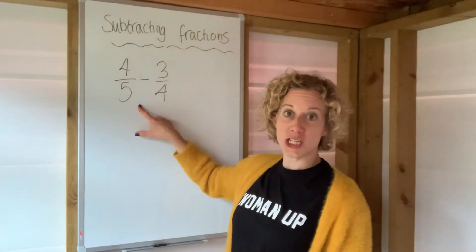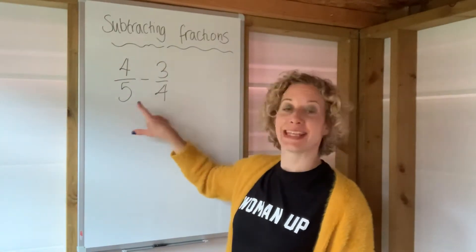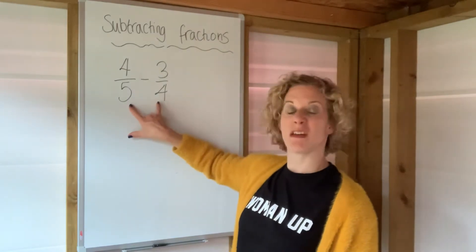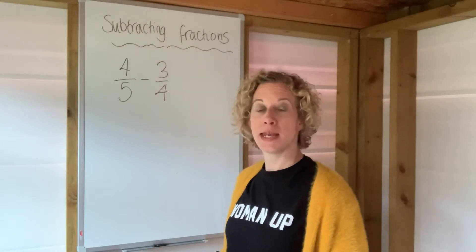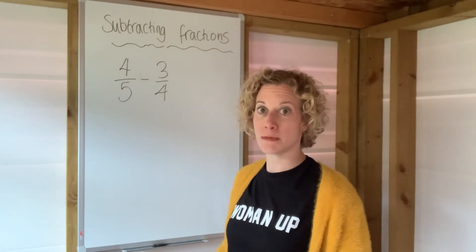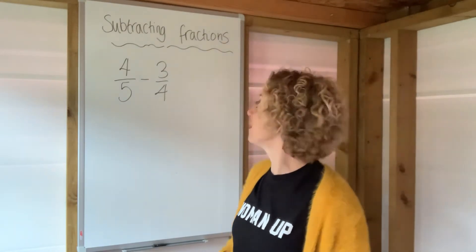Similar to addition, we're going to make the denominators the same. At the moment, we can't because they're different. So, we're going to change both of these into the same number, and it has to be the lowest common multiple of those two numbers, which in this case is 20.